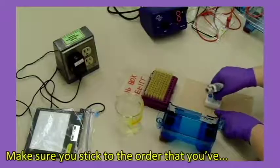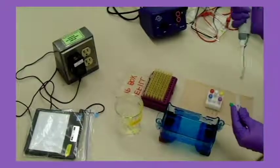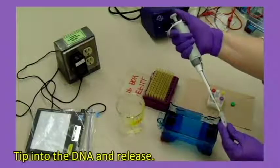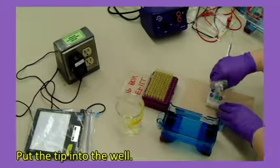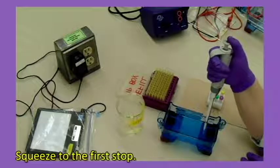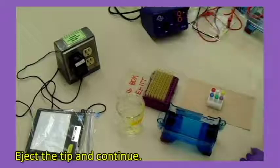Make sure that you stick to the order that you've planned and pick up the next tube. Press to the first stop and hold. Tip into the DNA and release. Put the tip into the well. Squeeze to the first stop. Remove the tip from the buffer and release. Eject the tip and continue.